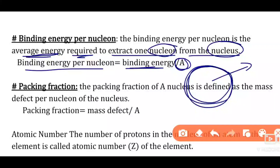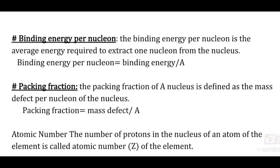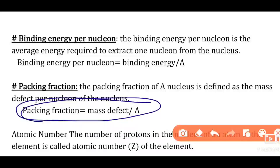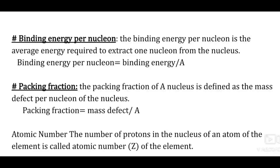A is the mass number. Next, packing fraction — this is a one-mark definition. The packing fraction of a nucleus is defined as mass defect per nucleon of the nucleus. So packing fraction = mass defect divided by A. Binding energy per nucleon = binding energy divided by A. Atomic number Z is the number of protons in the nucleus of an atom of the element. Mass number is denoted by A.